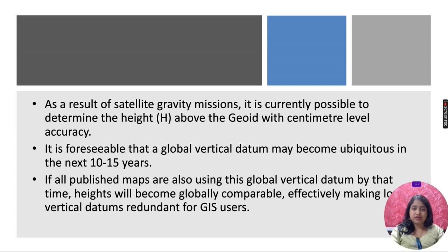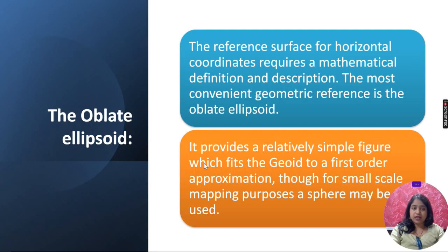As a result of satellite gravity missions, it is currently possible to determine the height above the geoid with centimeter level accuracy. It is foreseeable that a global vertical datum may become ubiquitous in the next 10 to 15 years. If published maps are also using the global vertical datum by that time, heights will become globally comparable, effectively making local vertical datums redundant for GIS users. The oblate ellipsoid we will see in the next video. Thank you.